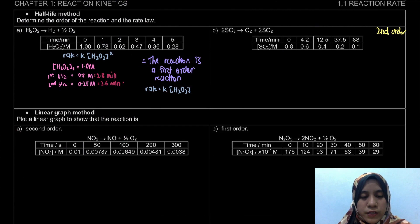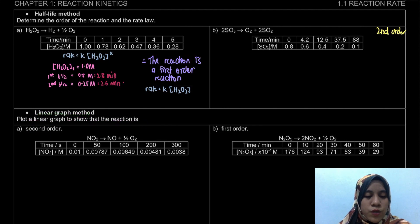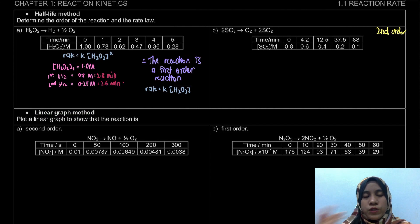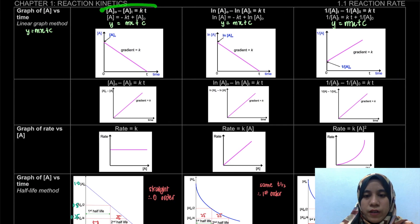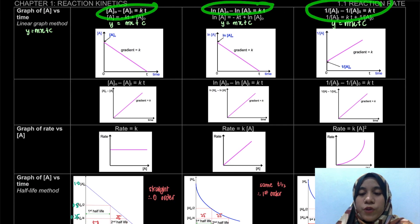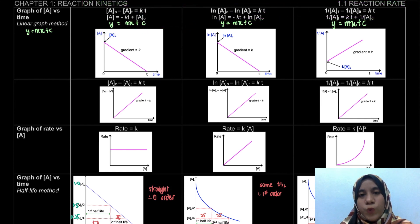Next, how to determine the order of reaction using the linear graph method. For the linear graph method, the question will give you the order of reaction and ask you to draw the linear graph. This depends on your integrated rate law — you have to rearrange the equation to get y = mx + c, so that you can determine what to plot as Y and what to plot as X.